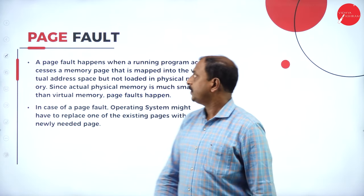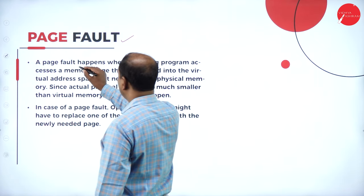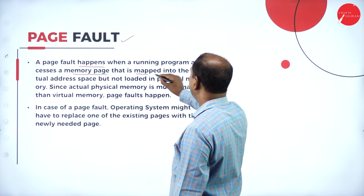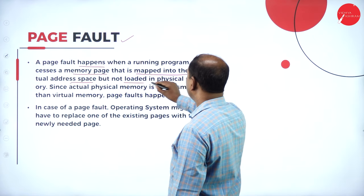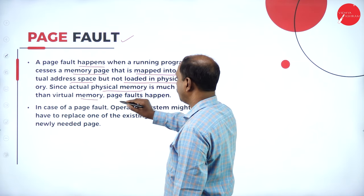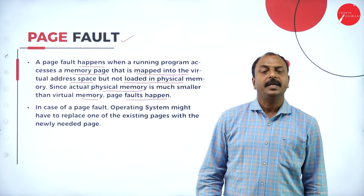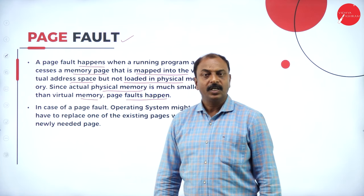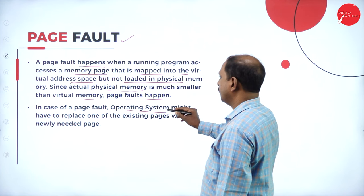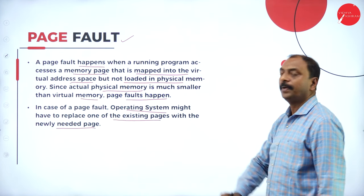A page fault happens when a running program accesses a memory page that is mapped into the virtual address space but not loaded in physical memory. Since actual physical memory is much smaller than virtual memory, page faults happen. When the requested page from the CPU is not available in main memory, it has to be called from secondary memory devices — that situation is called a page fault. In case of a page fault, the operating system might replace one of the existing pages with the newly needed page — that is called page replacement.